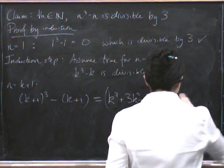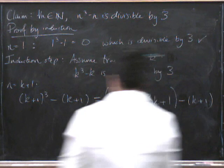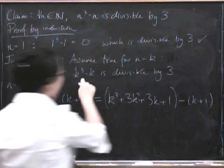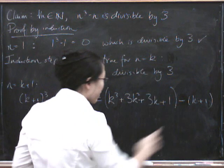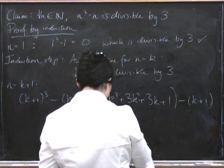And then, oh, it's a minus. Minus k plus 1. Well, we know that k cubed minus k is divisible by 3. So let's reorganize this to get k cubed minus k together.